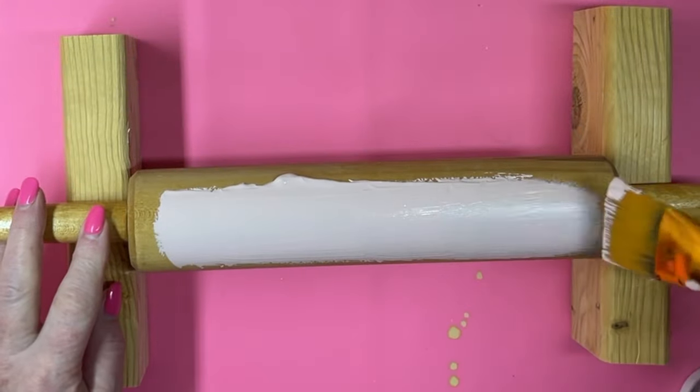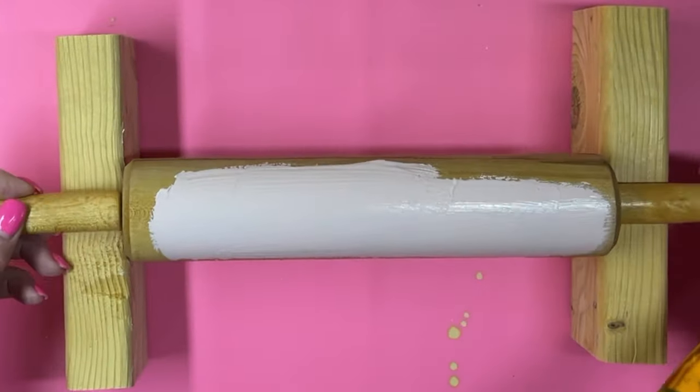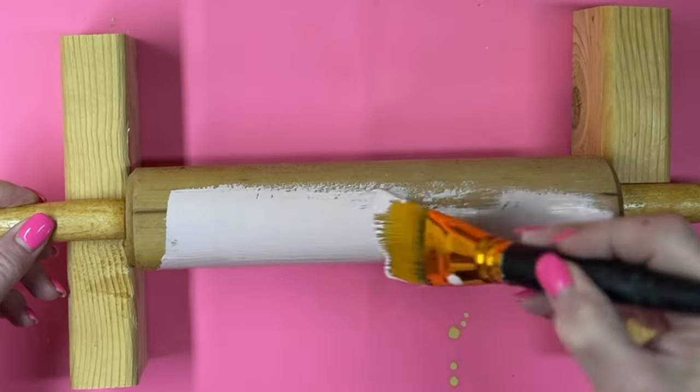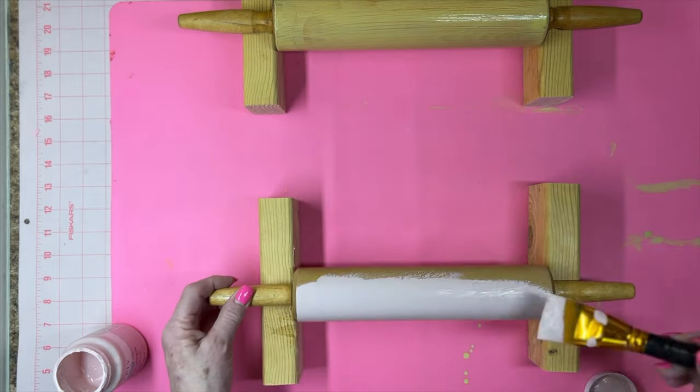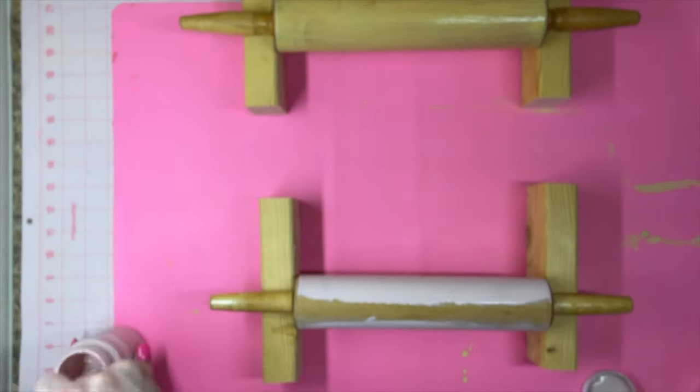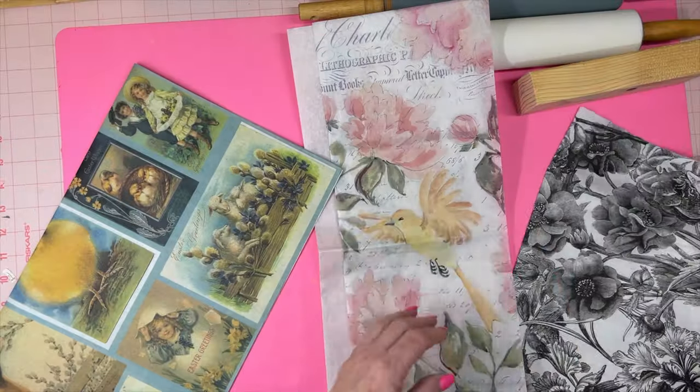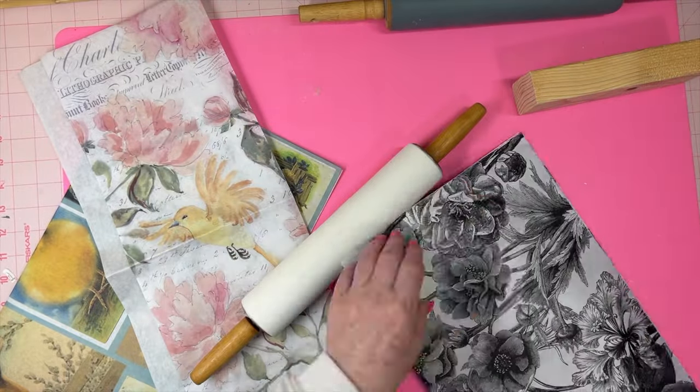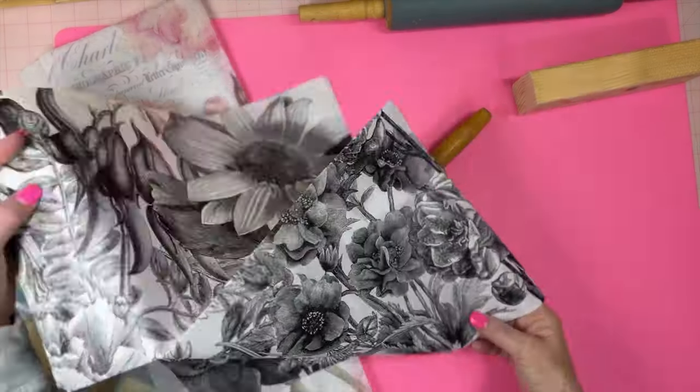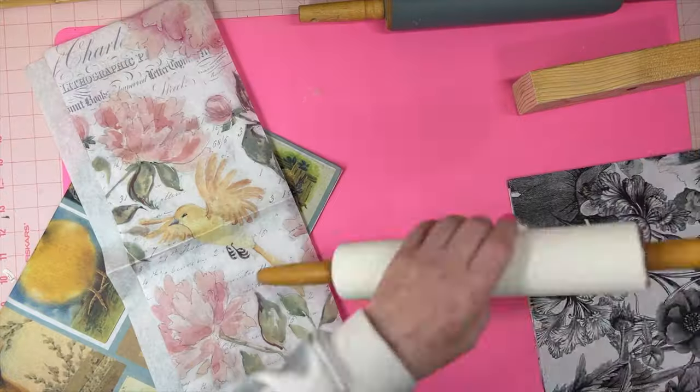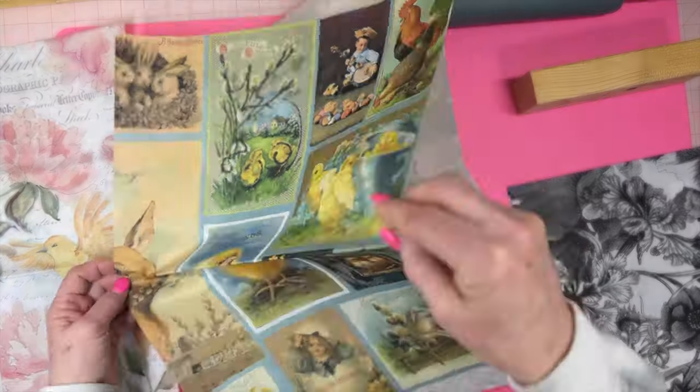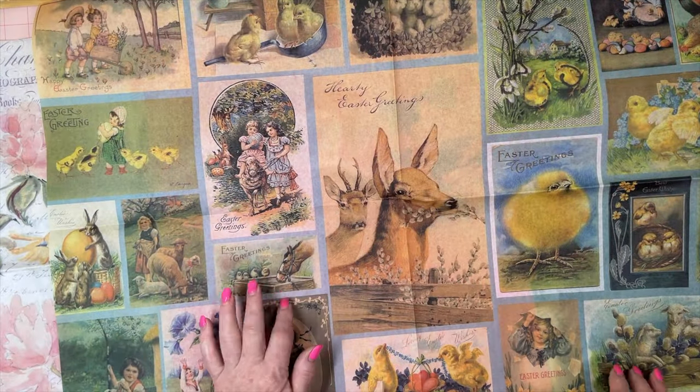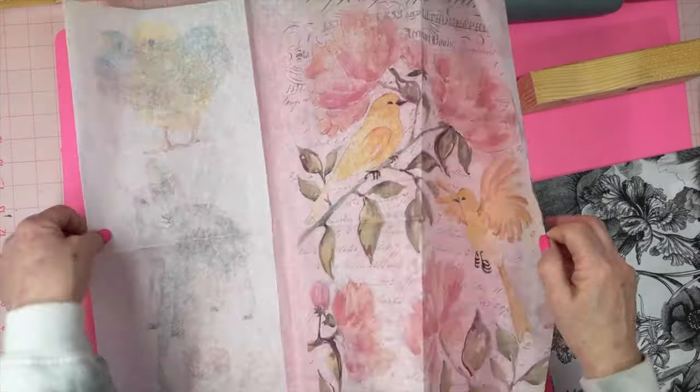For rolling pin number three I used Waverly chalk paint in ballet slipper. And this time I decided that I was going to decoupage it and I used Royce Cycle Decoupage paper in spring blocks. Here I have a few decoupage papers out and I'm trying to decide which one I want to use. This one right here that's a JRV decoupage paper and it's really easter-y. I decided I wanted to go a little more spring than easter-y so I decided to go with the spring blocks.